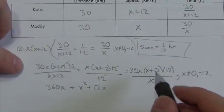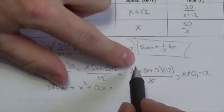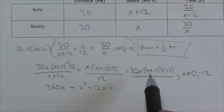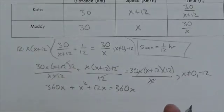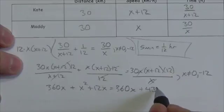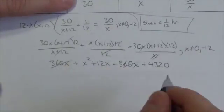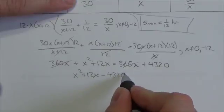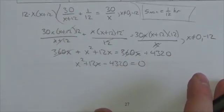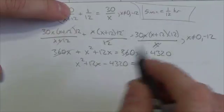The 360x terms cancel from both sides. The remaining equation has a quadratic: distributing gives x squared plus 12x on one side. Bringing terms over gives x squared plus 12x minus 4320 equals 0. Since factoring 4320 with a difference of 12 isn't obvious, we use the quadratic formula.